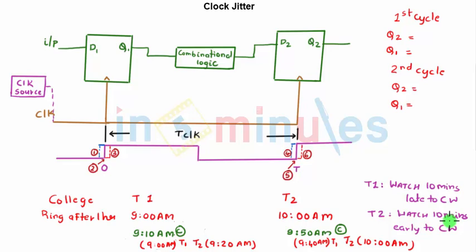Now we are all set to understand jitter. Presume that one day in the college the bell malfunctions. In this case both teachers will trust their respective watches to enter the classroom. Teacher one has a watch which is 10 minutes late compared to the college watch, and teacher two has a watch which is 10 minutes early compared to the college watch.